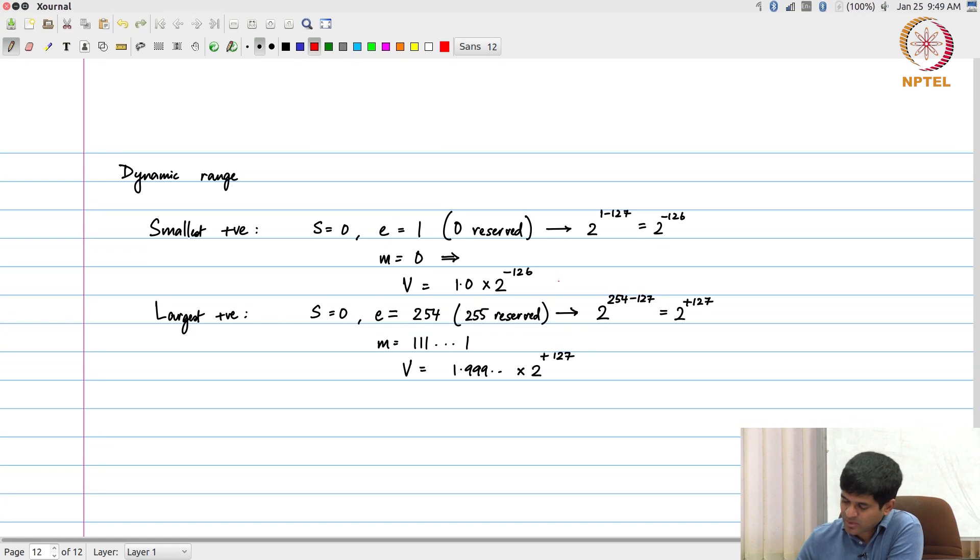2 to the power minus 126 is approximately equal to 10 to the power minus 40, somewhere around that. And this is approximately equal to, again, 2 to the power plus 128, once again somewhere around 10 to the power plus 40, 41, 42, something of that sort. I am just going to write it as 40, it is close enough.